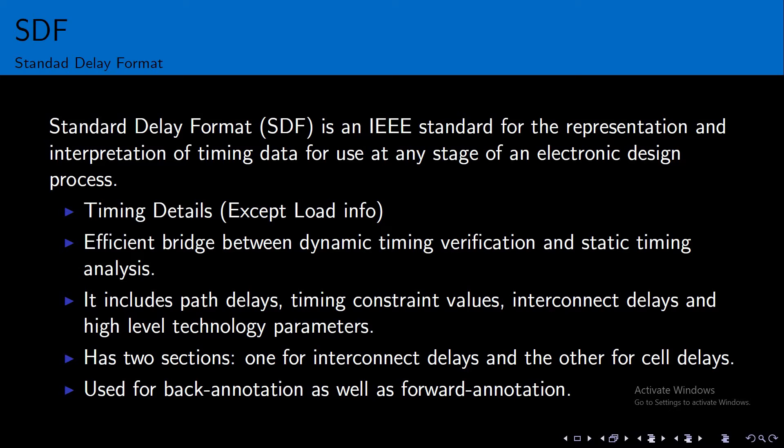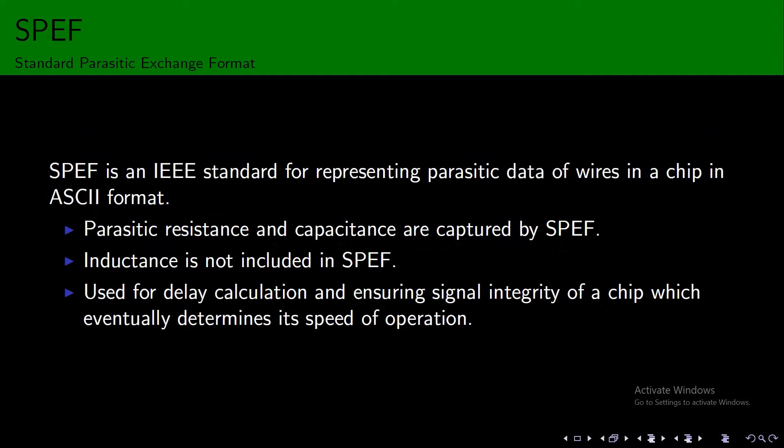The next one is SPF, Standard Parasitic Exchange Format. It is an IEEE standard for representing parasitic data of wires in a chip in ASCII format. Non-ideal wires have parasitic resistance and capacitance that are captured by SPF. The wires also have inductance that is not included in SPF. SPF is used for delay calculation and ensuring signal integrity of a chip, which determines its speed of operation.